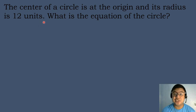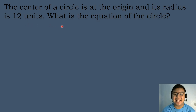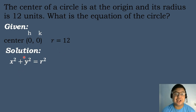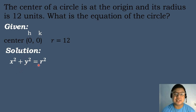Let's have our first example. The center of a circle is at the origin and its radius is equal to 12 units. What is the equation of the circle? Let's list down the given: the center is at the origin, meaning the coordinates are (0, 0). Since the center is at the origin, we will use the formula x squared plus y squared equals r squared.